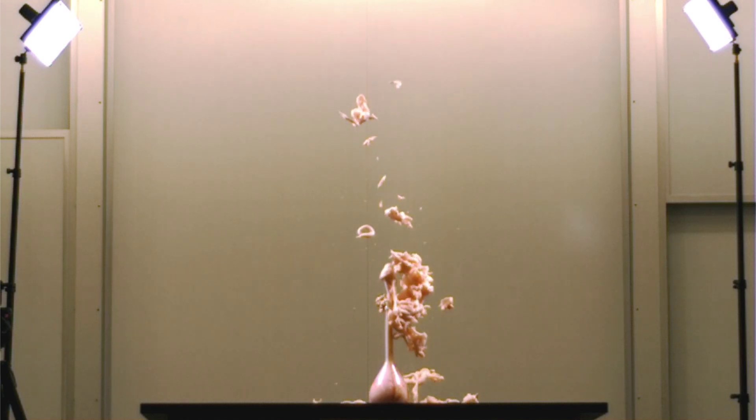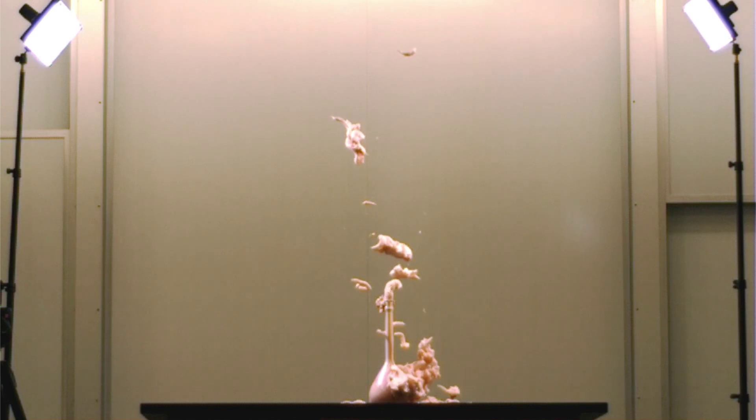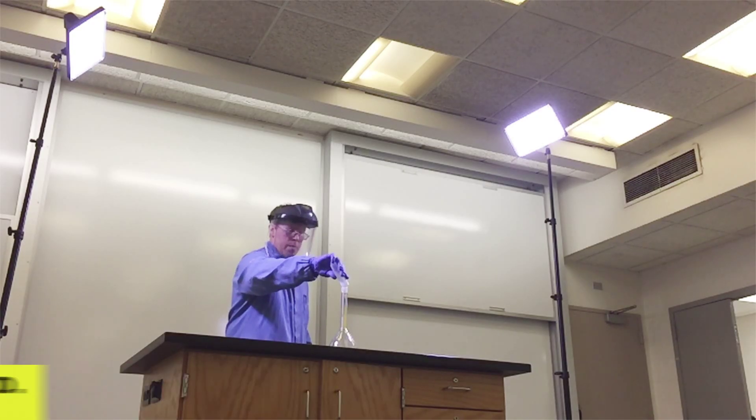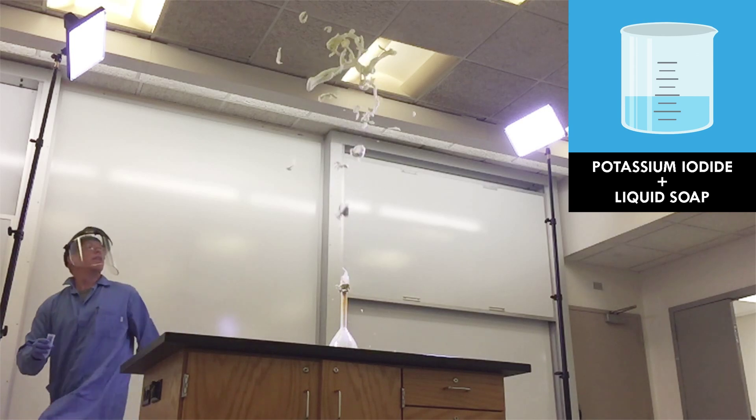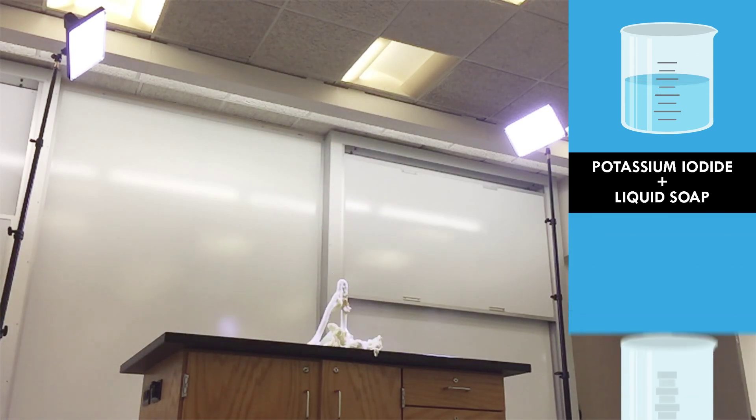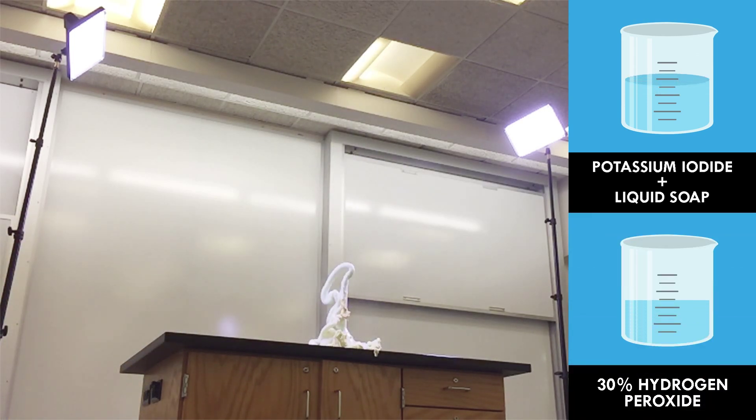What's really happening here is a great demonstration of catalysts, things that speed up or kickstart chemical reactions. Chemistry professor Matt Hardings is adding a potassium iodide catalyst and some detergent soap to a solution of 30% hydrogen peroxide.